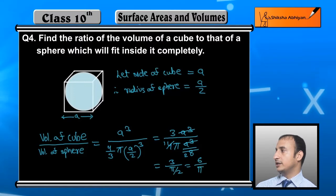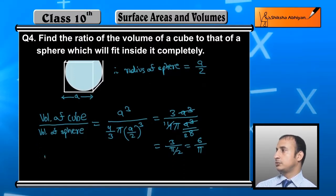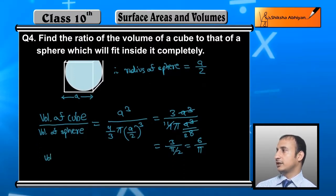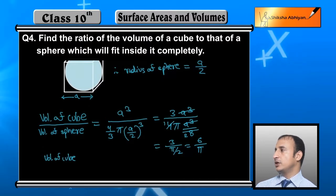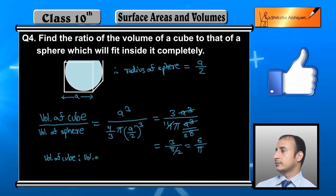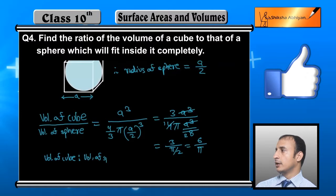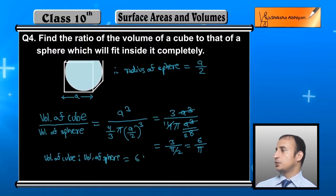So the ratio of the volume of cube to the volume of sphere is equal to 6 : π. This is the required ratio.